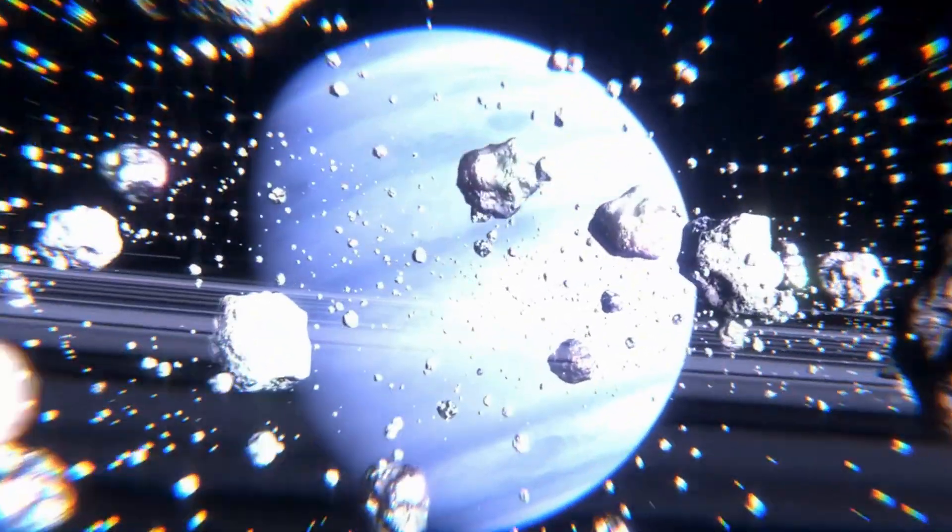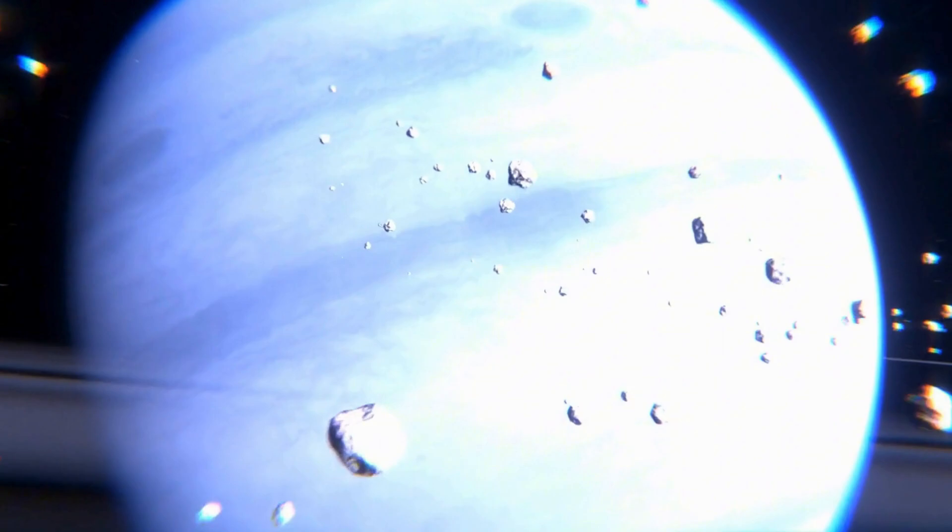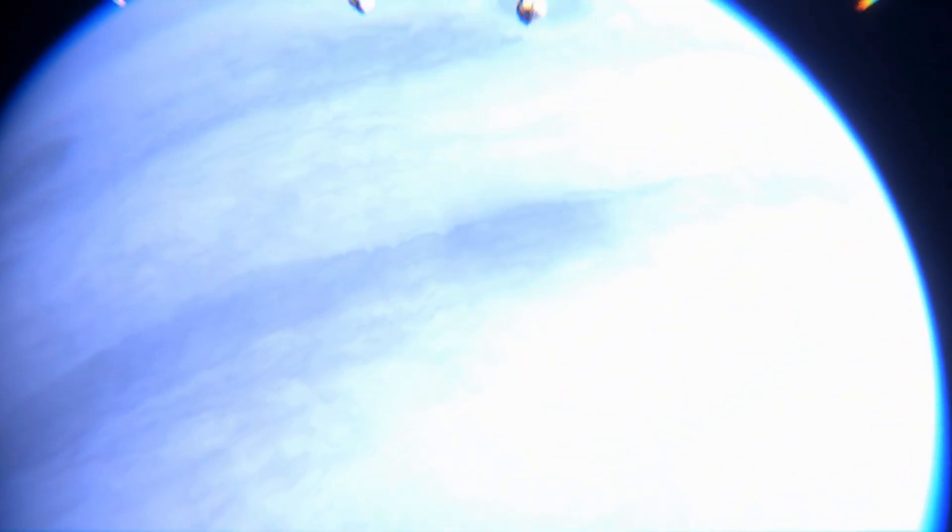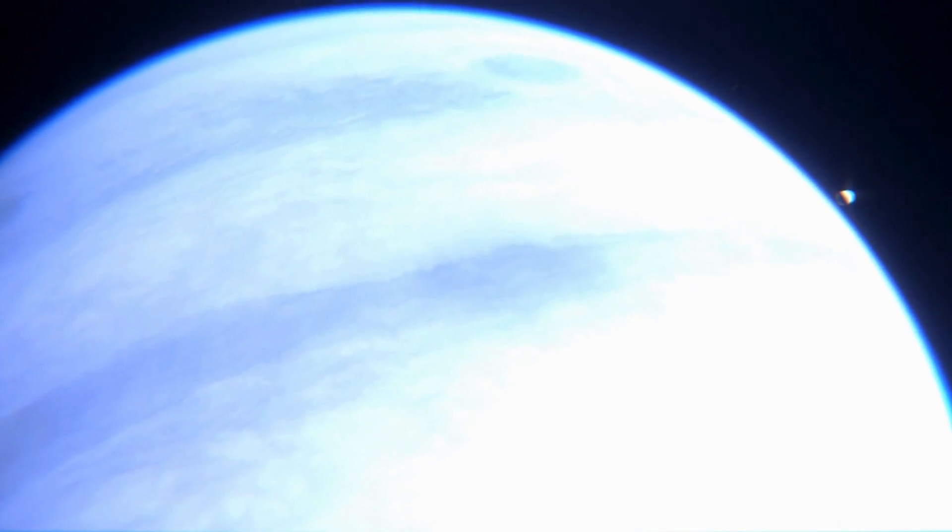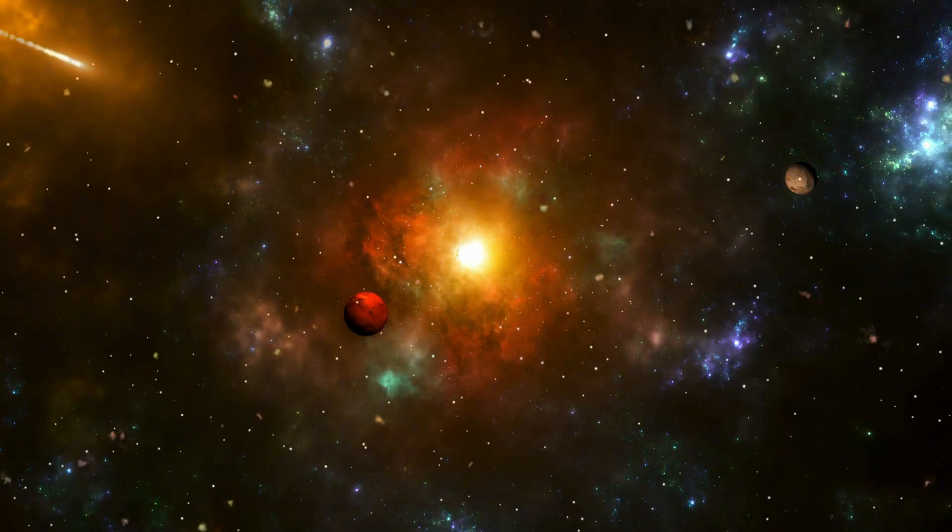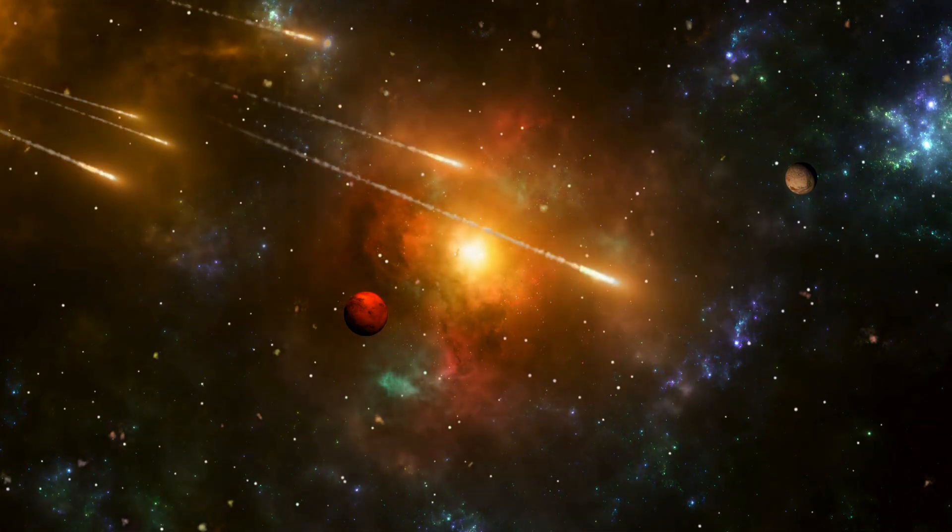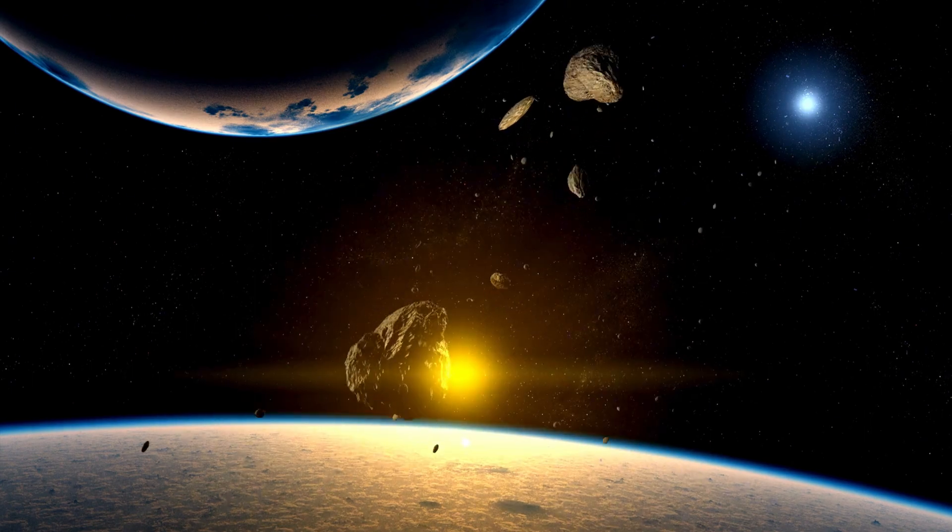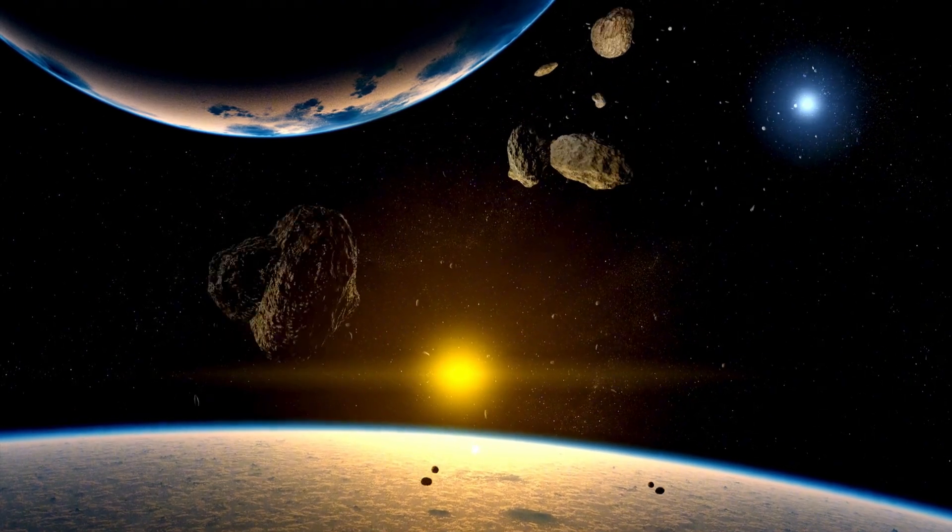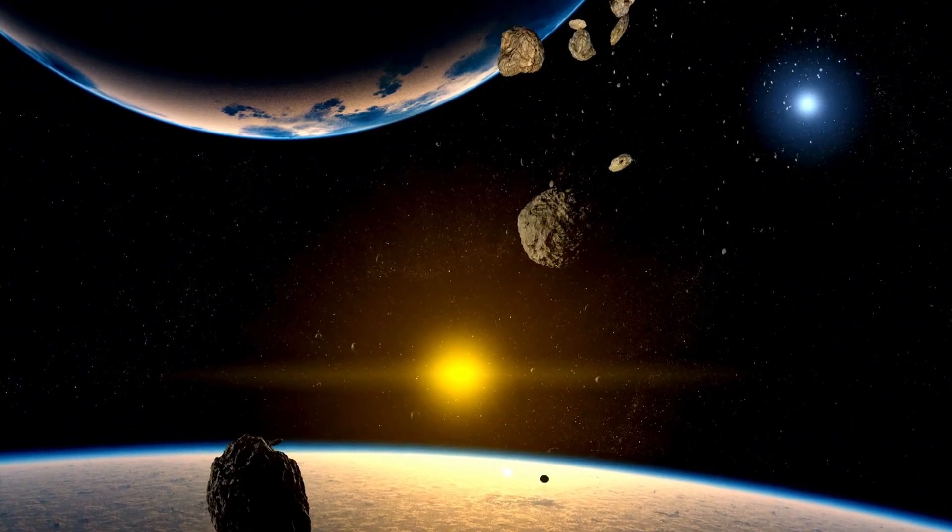On the other hand, the Oort Cloud is an immense spherical shell that may stretch out to 100,000 astronomical units - almost a quarter of the way to Proxima Centauri, the nearest star. Unlike the orderly orbits of the Kuiper Belt, Oort Cloud objects can fall toward the Sun from any direction, explaining why the long-period comets it produces often appear out of nowhere, following wildly elongated orbits that can take thousands or even millions of years to complete.